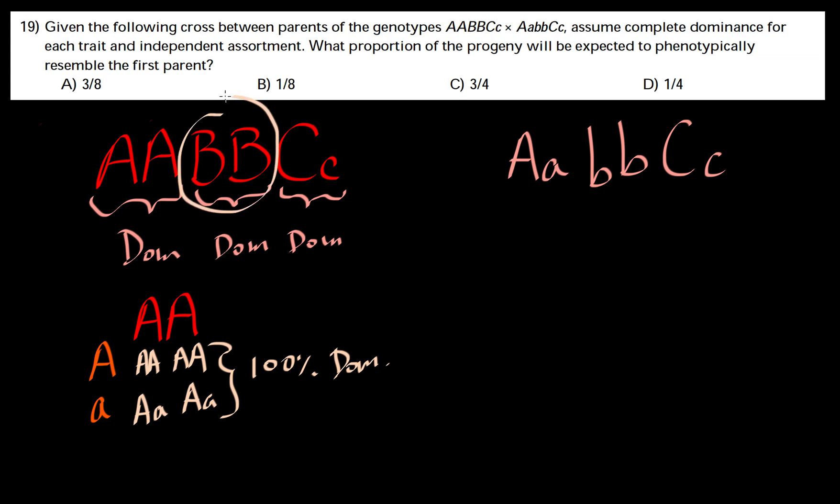The same thing goes with B. When you cross homozygous dominant with homozygous recessive, it's 100% genotypically heterozygous, which is 100% dominant phenotypically.